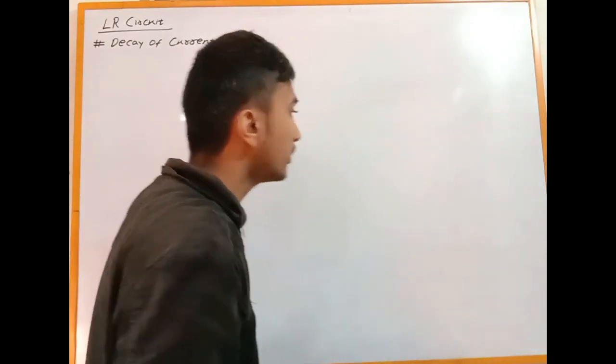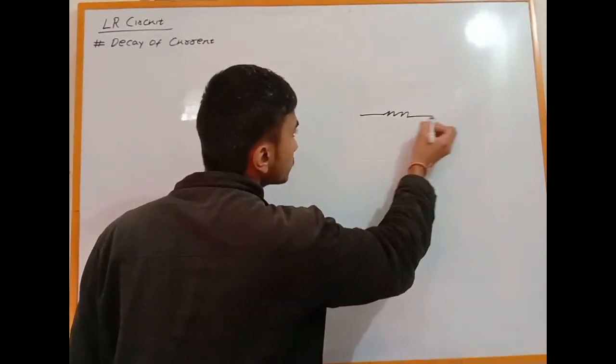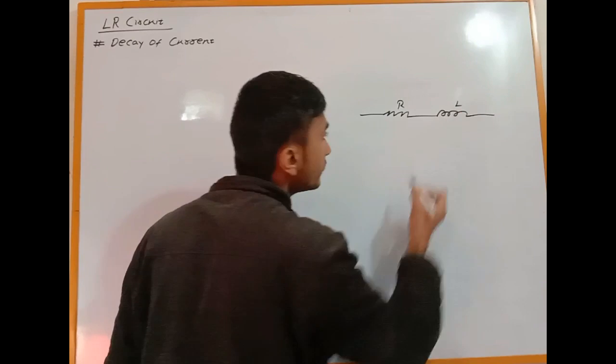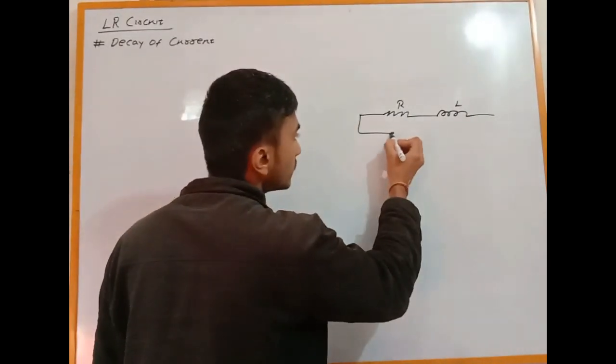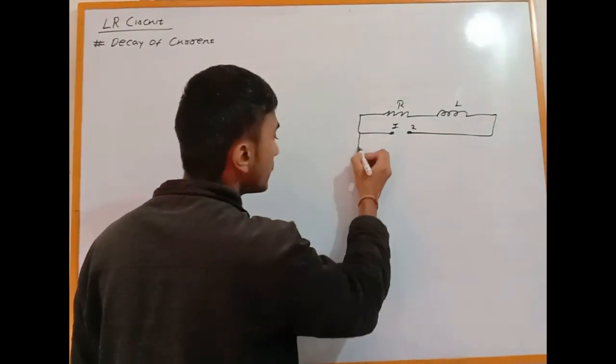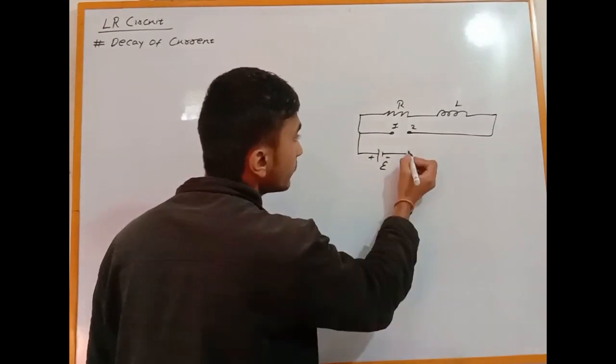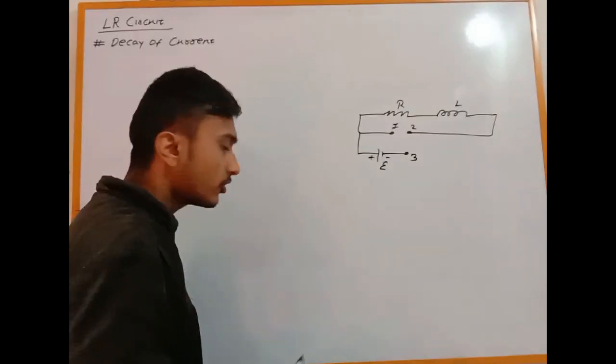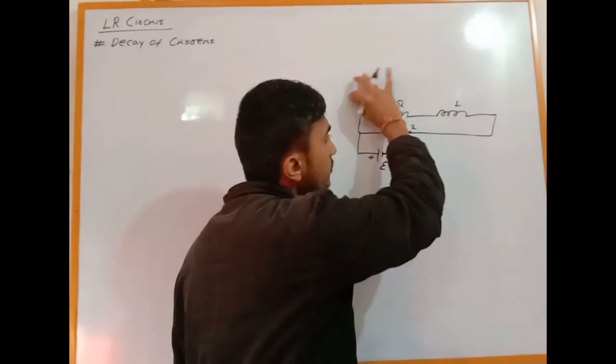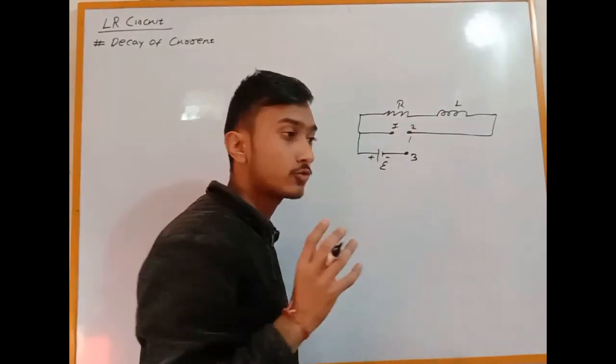I'll mathematically derive this. We have a resistor with resistance R and an inductor with self-inductance L. The EMF drives current through the circuit. Using Kirchhoff's voltage law, the EMF equals the potential difference across R plus the potential difference across L.